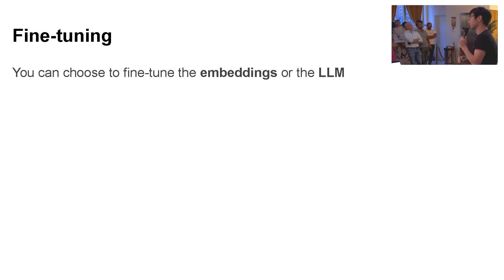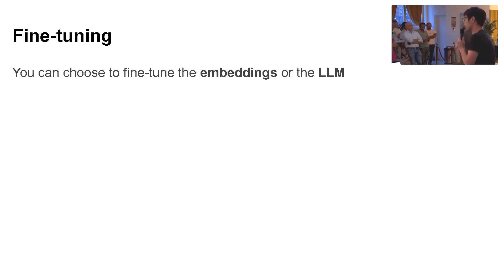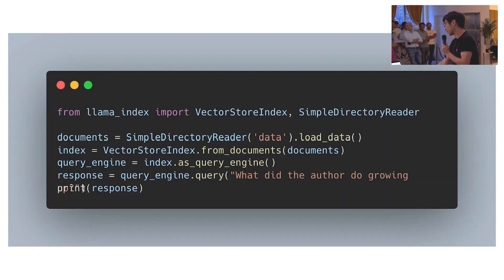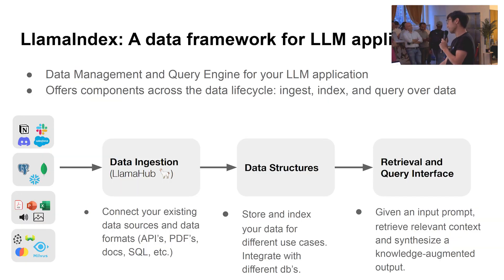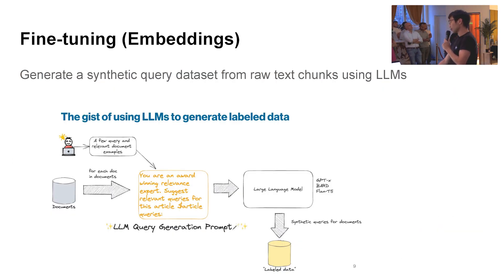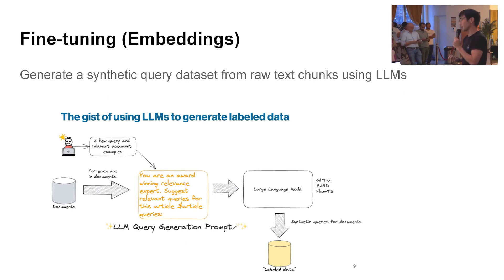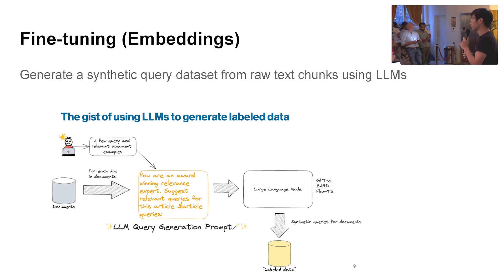Now let's talk about fine-tuning and how it applies to RAG. With fine-tuning, you can choose to fine-tune the embeddings model — when you load stuff into a vector DB, you add a bunch of embeddings. You can also fine-tune the language model itself, which is used during synthesis. When thinking about fine-tuning the embeddings model, the first question is: how do we get a synthetic dataset to actually fine-tune your embedding model?